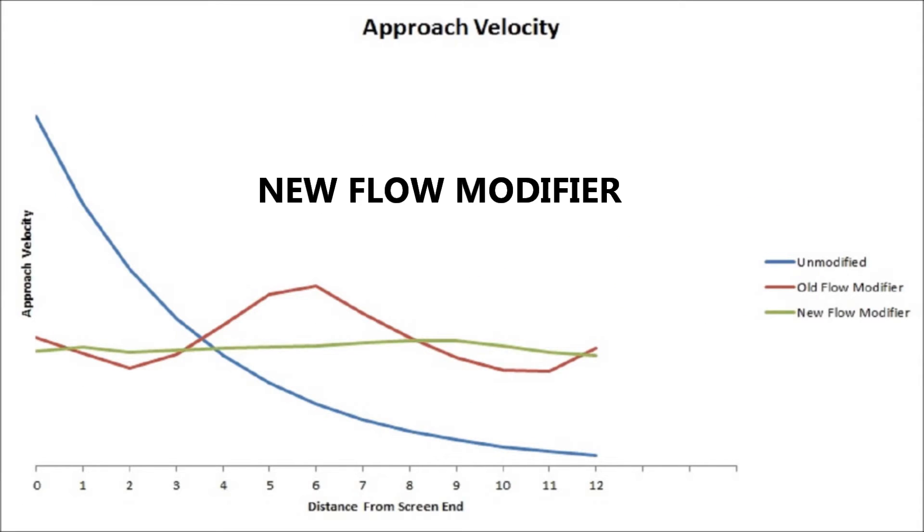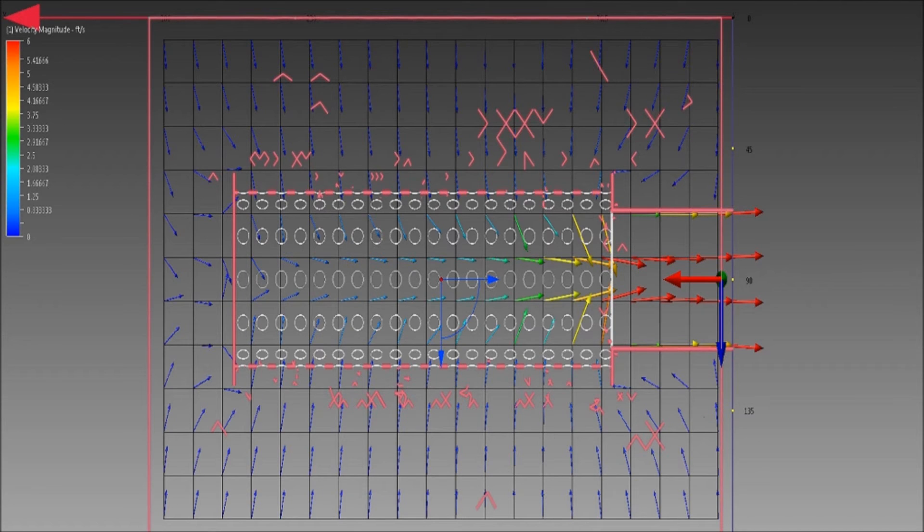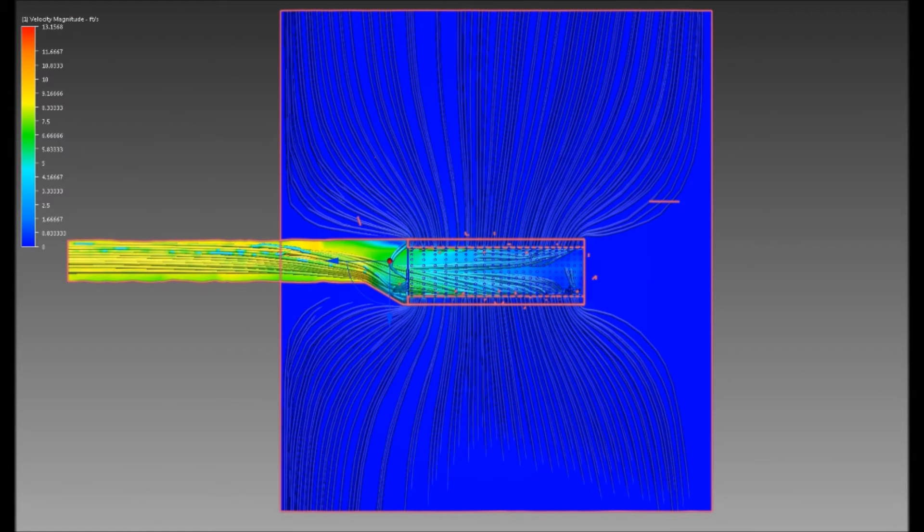Our new flow modifier is better still. With the new flow modifier, there is nearly equal flow across the screen, and the modifier can scale in diameter and length for different site conditions.